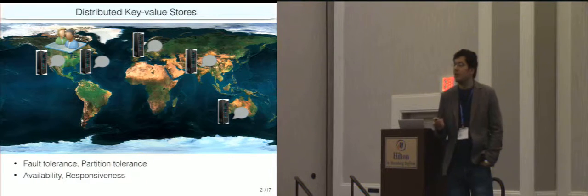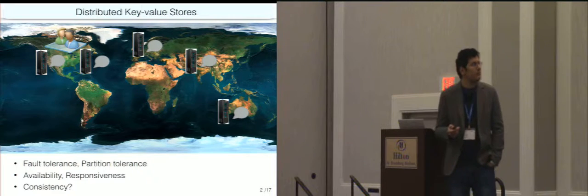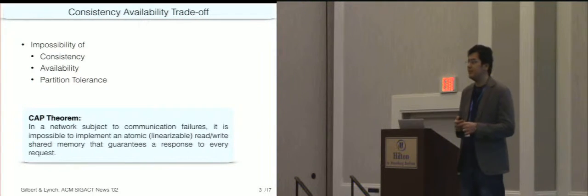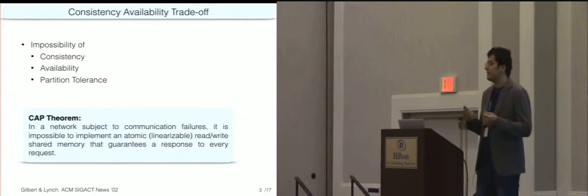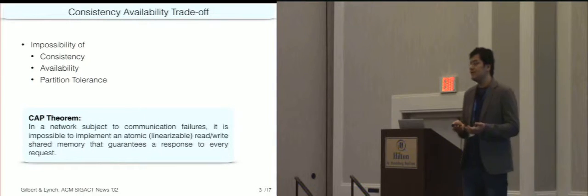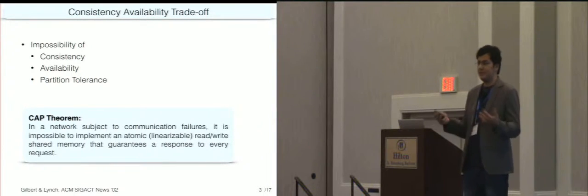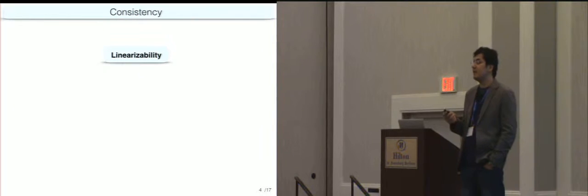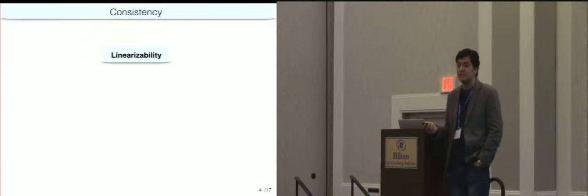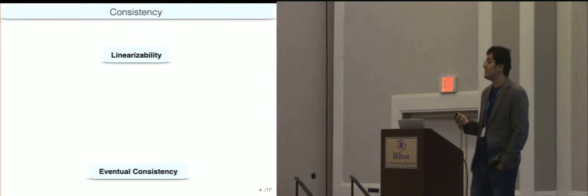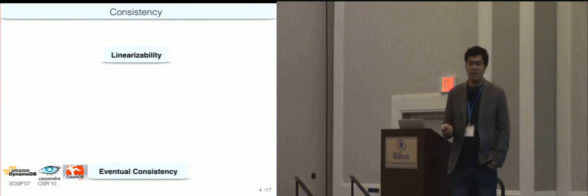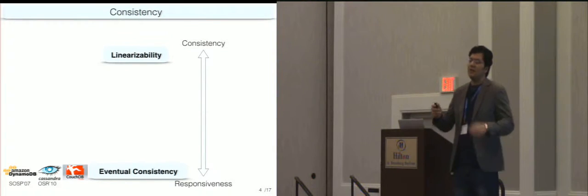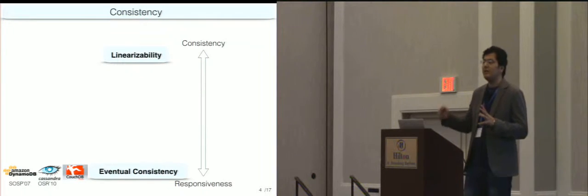But the question is: with this replication, how much consistency can we really provide? There is this interesting fundamental result from Gilbert and Lynch in 2002 that says it's impossible to implement a read-write location that is both linearizable and always available. It presents a trade-off between availability and consistency. So maybe that's why most system designers, instead of targeting linearizability, target more relaxed notions of consistency that are collectively called eventual consistency.